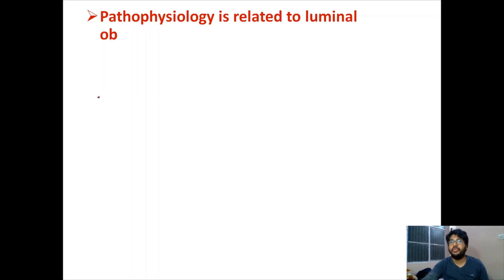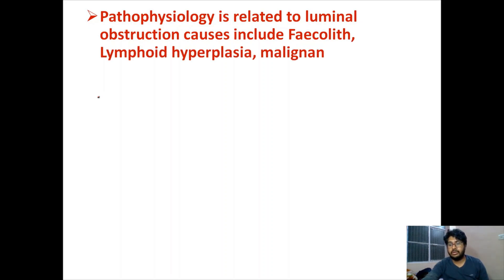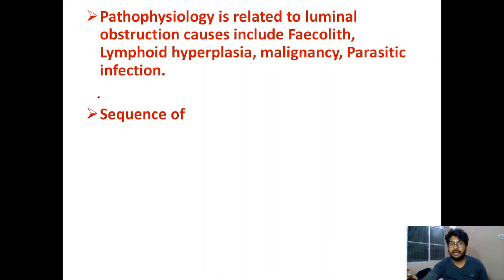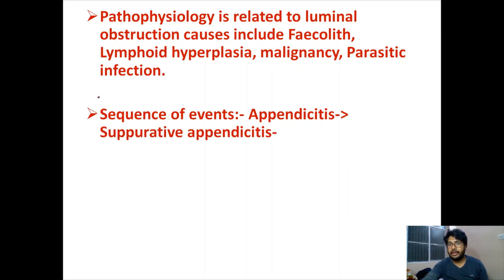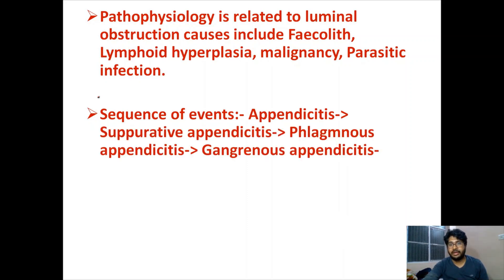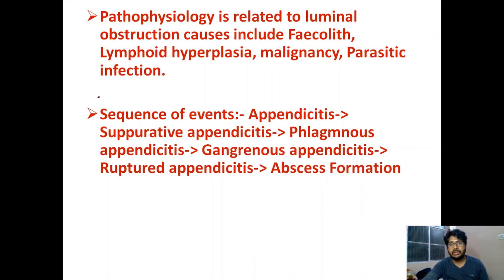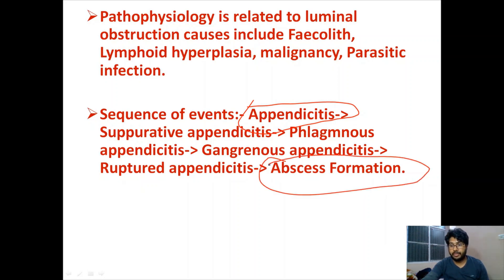Pathophysiologically, there should be luminal obstruction. Causes include fecalith, lymphoid hyperplasia, malignancy, and parasitic infection. The sequence of events is: appendicitis, then suppurative appendicitis, then phlegmonous appendicitis, then gangrenous appendicitis, then ruptured appendicitis, which leads to abscess formation. The diagnosis can be made at any stage depending on when the patient presents to the emergency.